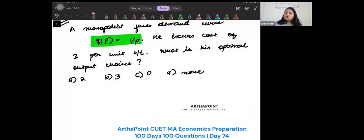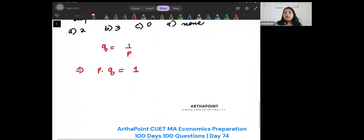Okay, let's go ahead. So Q is equal to 1 by P. This is given to you. Let me tell you one thing. What will be P into Q? P into Q will be 1.